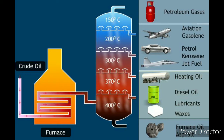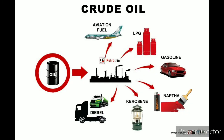The products obtained from refining petroleum are: petroleum gas, petrol, kerosene, diesel, fuel oil, lubricating oil, and paraffin wax. Petroleum products used as fuels are petroleum gas, petrol, kerosene, diesel, and fuel oil. Petroleum products not used as fuel include petroleum ether, lubricating oil, grease, petroleum jelly, and paraffin wax.